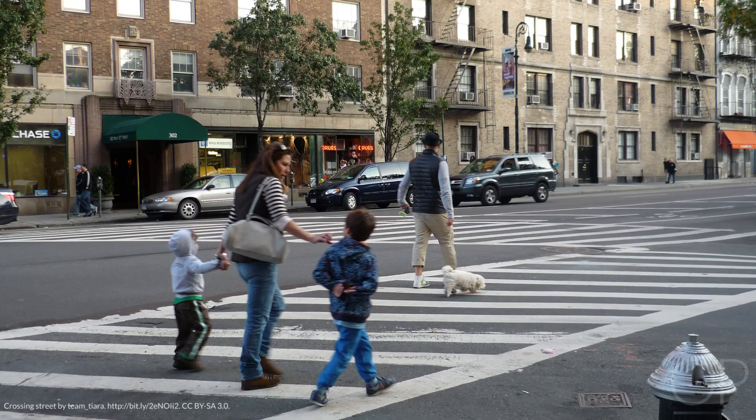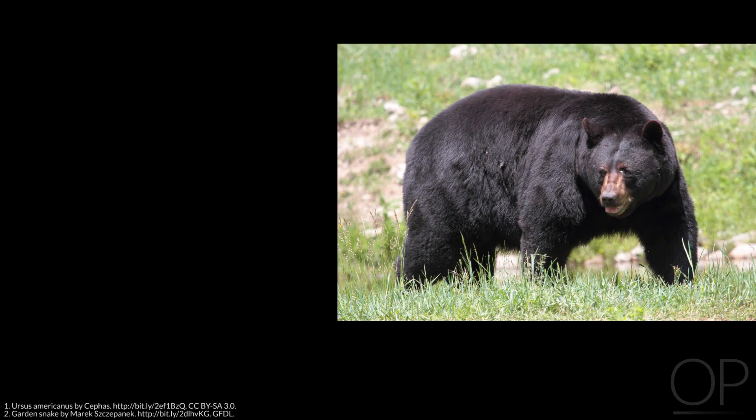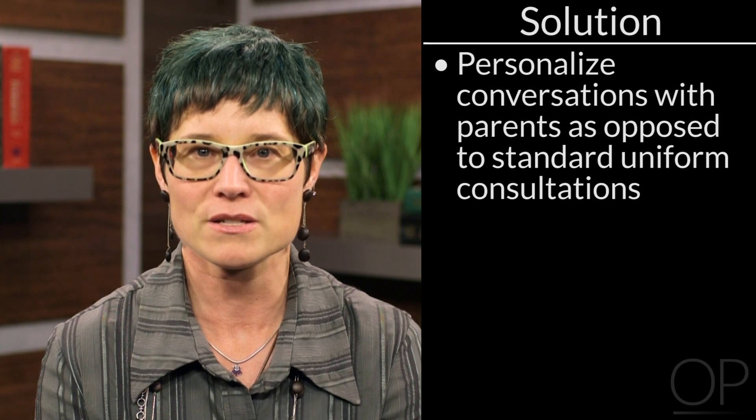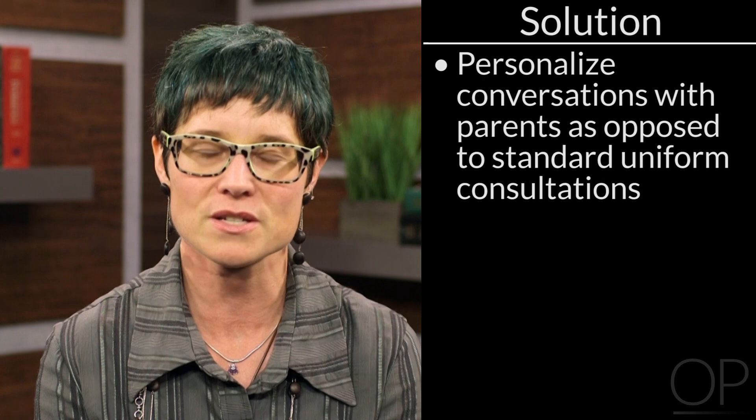We evolved to make survival decisions with our emotions. When we cross the street and hear a honk, we don't make a pros and cons list — we just get out of the way. So powerful emotions that influence us may be as morally and scientifically informed as any other algorithm. Emotions and rationality are both important. We have to speak to parents' prefrontal cortex, but also to their primitive brain, because they're listening and deciding with both.